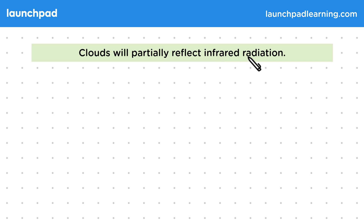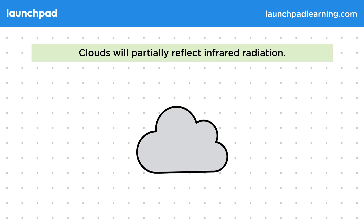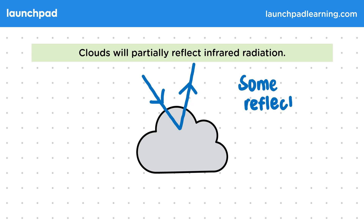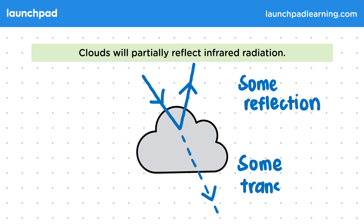Clouds will partially reflect infrared radiation. Remember that when a wave reaches a boundary, it can reflect off the boundary, transmit through it, be absorbed by it, or some combination of the three. We see this behaviour with the infrared waves from the Sun as they reach the Earth. Unless it's a clear day, these waves will hit clouds before reaching the Earth's surface. When this happens, some of the energy of the wave will be reflected and sent back into space, while some of the energy will transmit through the cloud and reach the Earth.